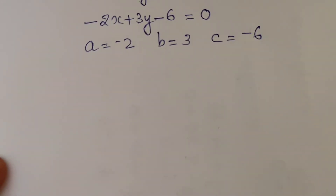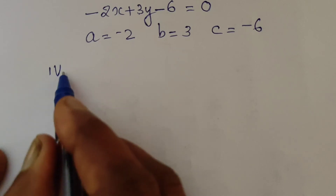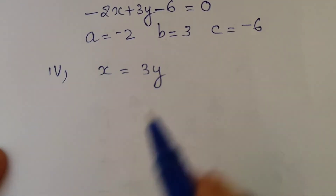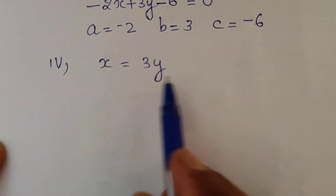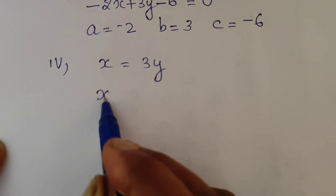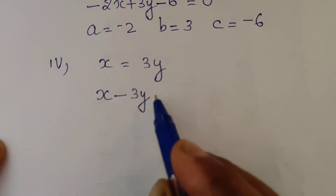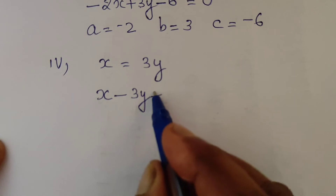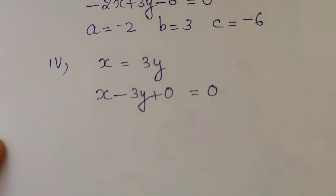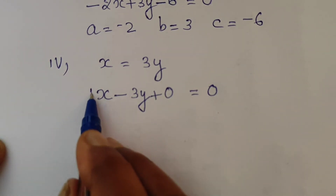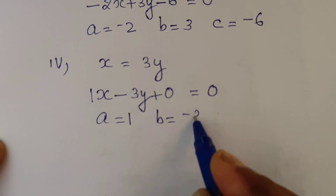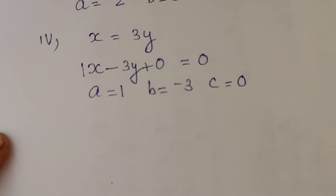Part (iv): x is equal to 3y. Writing in standard form by transposing, we get x minus 3y equal to 0. The constant term is 0, so x minus 3y plus 0 equal to 0. Therefore, a is equal to 1, b is equal to negative 3, and c is equal to 0.